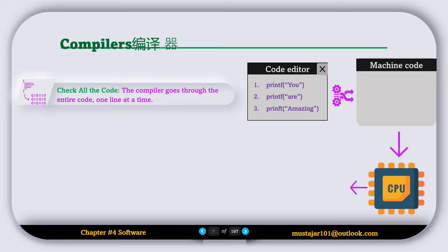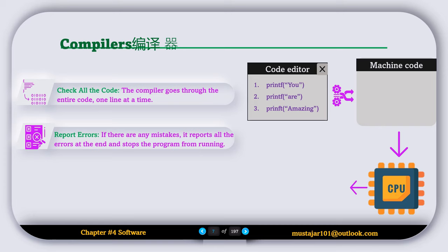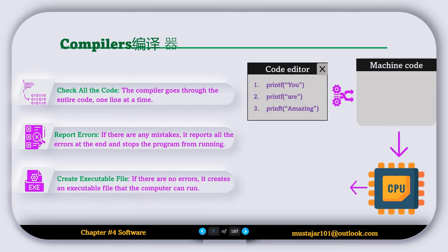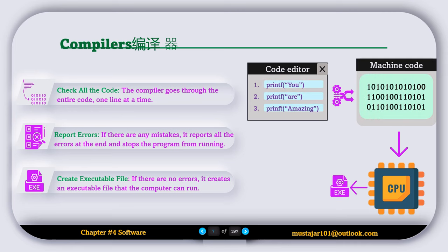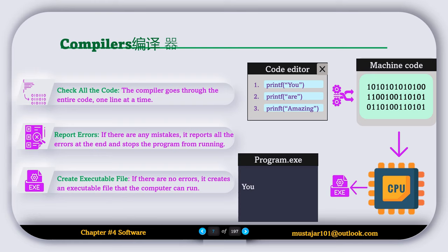Let's break down the compiler steps in more detail. The compiler goes through the entire code one line at a time. If there are any mistakes, it reports all the errors at the end and stops the program from execution. If there are no errors, it creates an executable file that can run on a computer. The compiler reads the code line by line, translates the whole code to machine code, passes it to the CPU, and the CPU creates an executable file. Once you open the executable file, you can see the program's output.